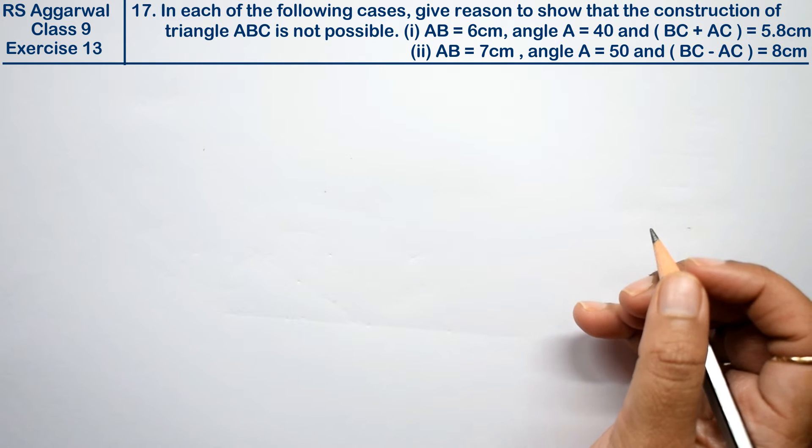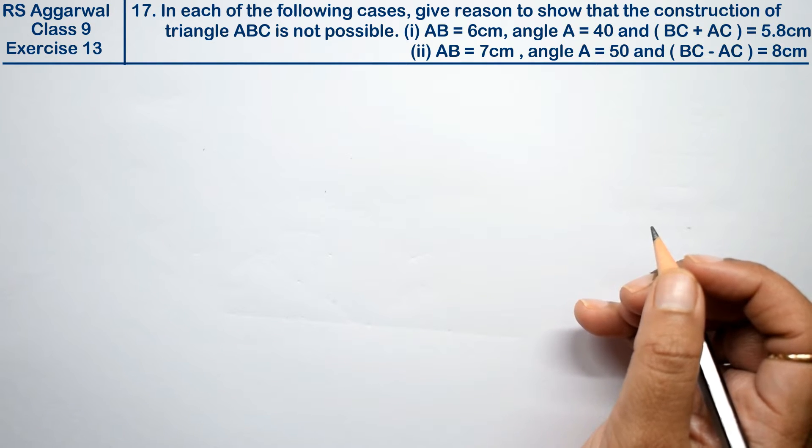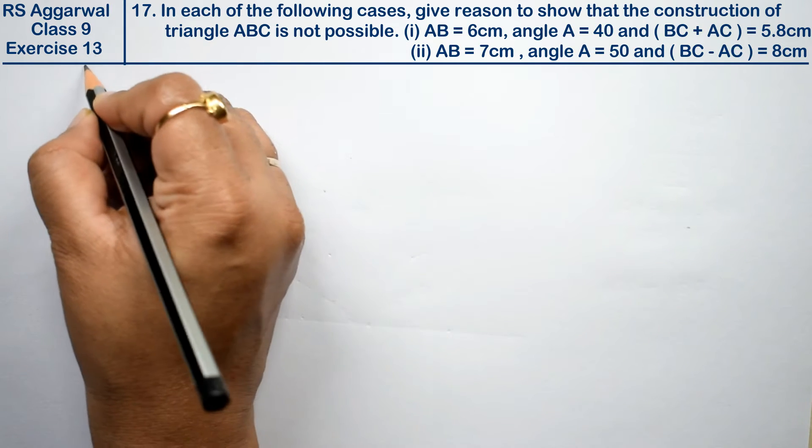Let's do question number 17 of exercise 13, that is geometrical construction. Question number 17 is: in each of the following cases, give reason to show that the construction of triangle ABC is not possible.